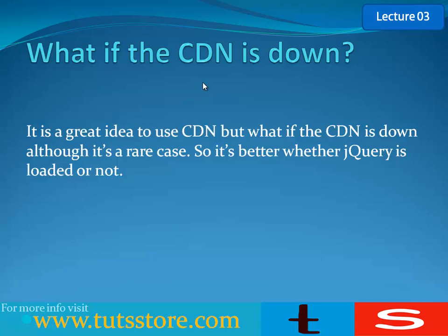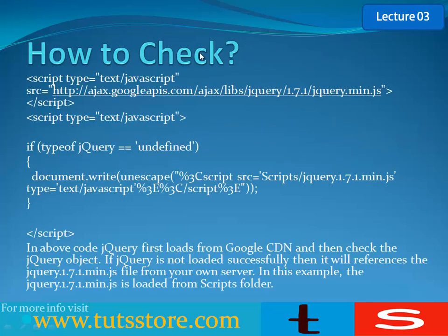What if the CDN is down? Although it is a rare case, it's a great idea to handle it. If the CDN is down, we have to check whether jQuery is loaded or not. First, I'm adding the jQuery library CDN file — this is the Google CDN file. After loading this file, I check: if typeof jQuery equals undefined, that means jQuery is not loaded. In that case, I write document.write with a script tag referencing the local jQuery file.